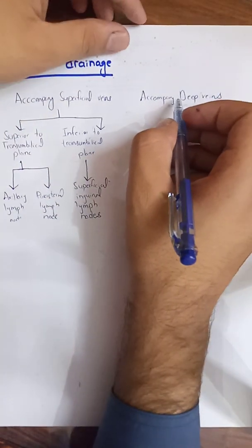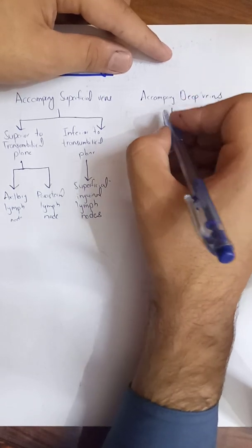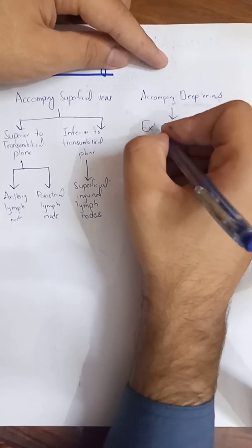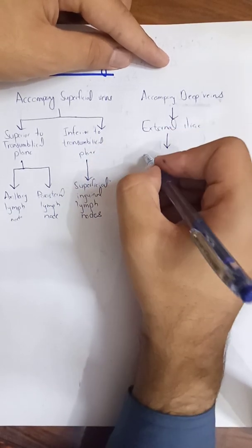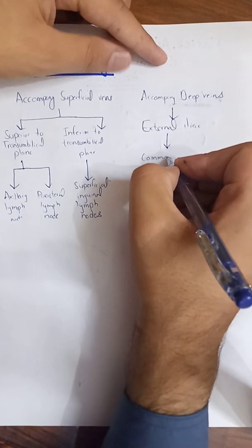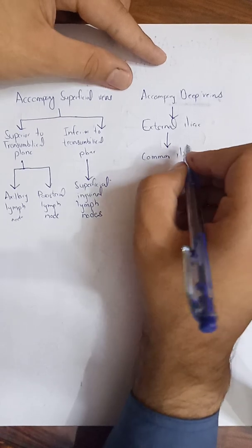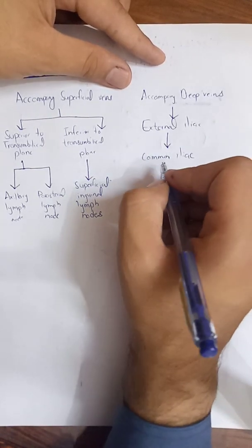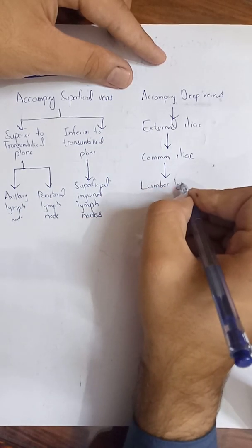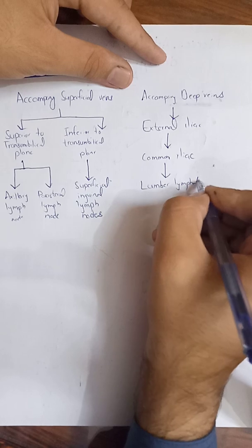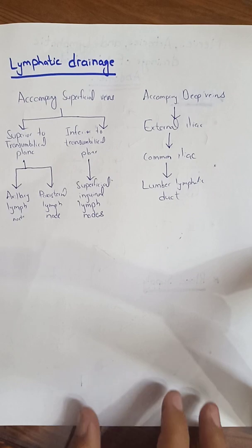For the vessels accompanying the deep veins, the lymph first drains into the external iliac lymph nodes, then moves to the common iliac lymph nodes, and from there into the lumbar lymphatic duct. This concludes the lymphatic drainage of the anterior lateral abdominal wall. Thank you.